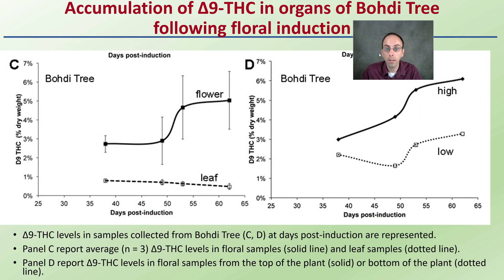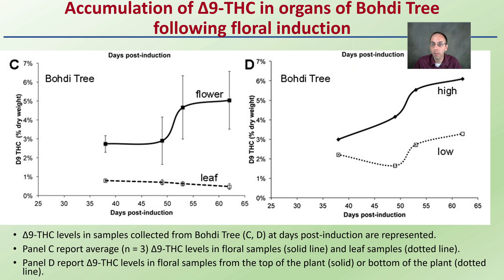Now the other variety they looked at shows the same basic idea and the same basic kind of data collection. We can see definitely that flower is a little bit more variable, overall trending upwards as it progresses, and the leaf really not a whole lot. Upper leaves show more Delta-9 THC accumulation than lower leaves, but both show a little bit of an increase — a small bump up from day 50 to day 55.